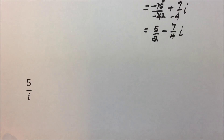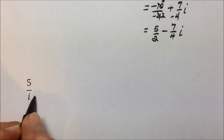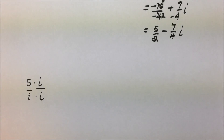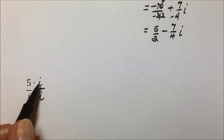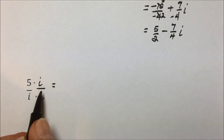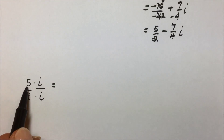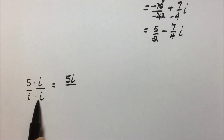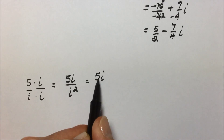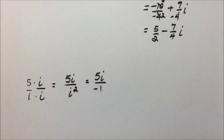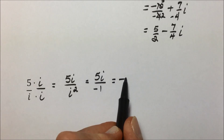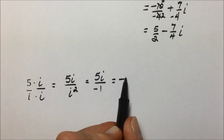In this last example, we have i in the denominator. Since i is a radical — the square root of negative 1 — we don't want to leave a radical in the denominator. To undo that, we simply multiply by i over i, which is equivalent to 1 and maintains an equivalent expression. Simplifying: the numerator gives us 5i. In the denominator, i times i is i squared, which by definition equals negative 1. Anything divided by 1 is that thing, and positive divided by negative is negative. Our final answer is negative 5i.